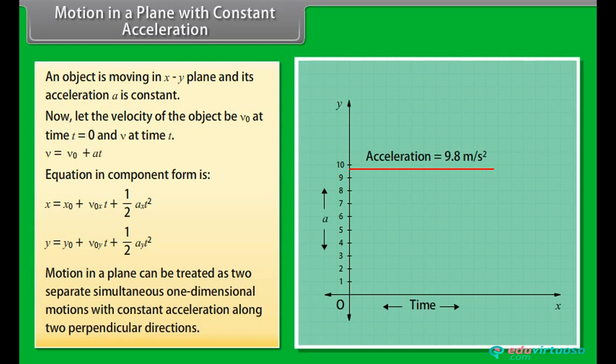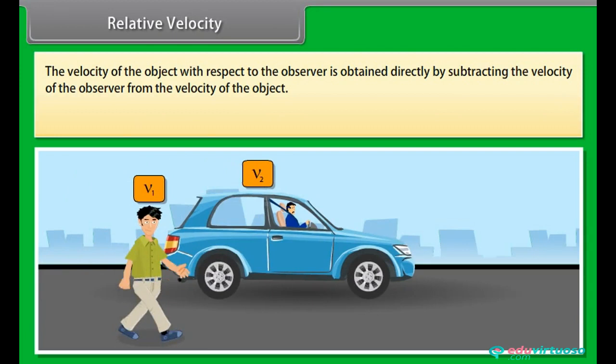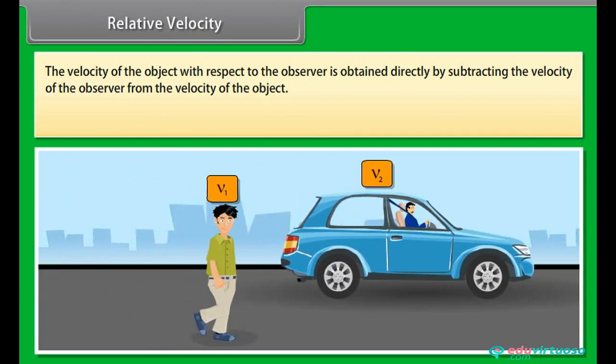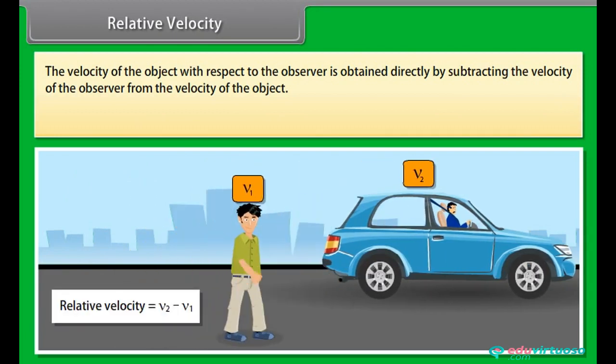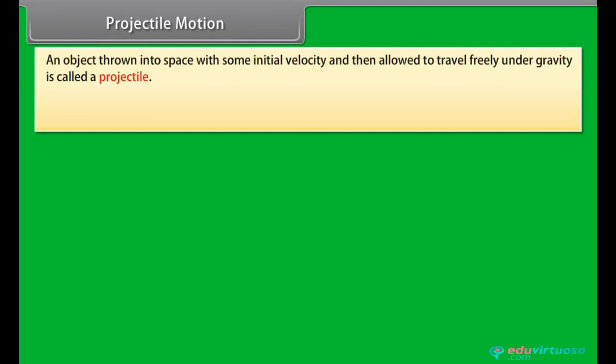These results are also valid for three dimensional motion. Relative velocity: The velocity of the object with respect to the observer is obtained directly by subtracting the velocity of the observer from the velocity of the object. Velocities are represented by vectors and they are subtracted by vector method.